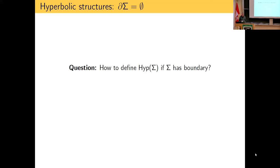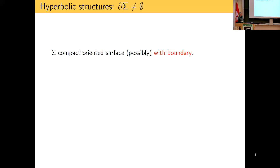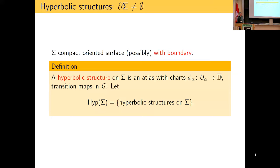If there is a boundary, we adjust the definition: since we have a manifold with boundary, the charts should take values in the closed Poincaré disk. Everything else stays the same — boundary goes to boundary, transition maps are given by elements of G. We then look at the space of all hyperbolic structures on such a surface.